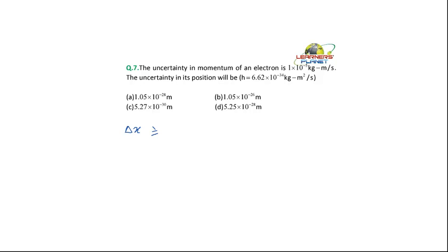Delta x is equal to - should I write the values? 6.626 into 10 to the power minus 34, h upon 4 pi, into 4, into 3.14, into mass.